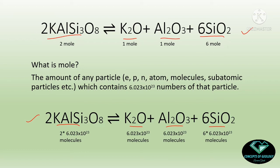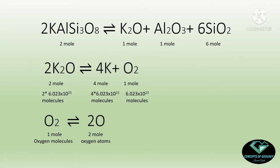If I convert to number of molecules, here we will have 2 × 6.023 × 10²³ numbers of molecules. It was 2 moles, but when talking about molecules, 1 mole contains 6.023 × 10²³ molecules. So this much of KAlSi3O8 will contain 2 × 6.023 × 10²³ molecules. From today onwards keep a clear visualization about chemical reactions — whatever is written in a balanced equation is in terms of moles.